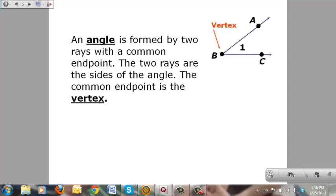If you take a look at this picture here, you've got two rays, ray BA and ray BC, with a common end point, otherwise known as a vertex, right here, and these two rays with a common end point form angle 1, right there.